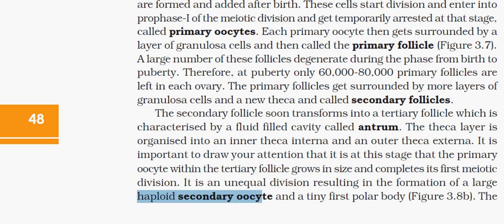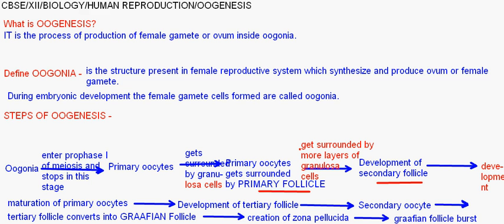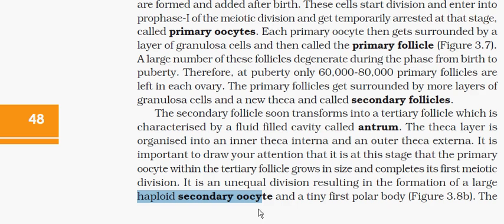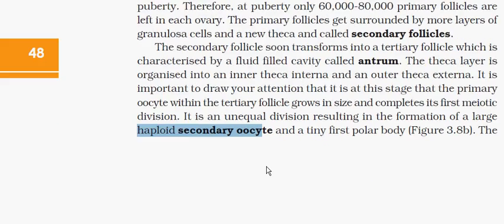Secondary oocyte is formed. Along with the secondary oocyte, a tiny first polar body is also formed. The secondary oocyte retains the bulk of the nutrient-rich cytoplasm of the primary oocyte.